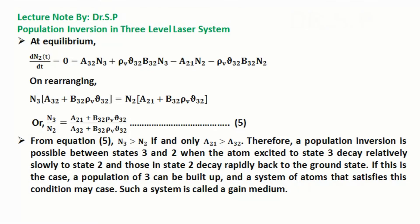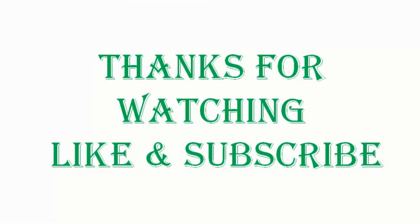Therefore, a population inversion is possible between states 3 and 2 when the atoms excited to state 3 decay relatively slowly to state 2, and those in state 2 decay rapidly back to the ground state. If this is the case, a population of 3 can be built up, and a system of atoms that satisfies this condition may lase. Such a system is called a gain medium. This much for today, bye bye, see you.